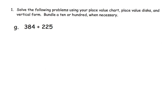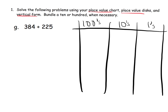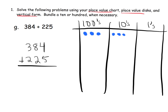Let's do another practice doing the exact same thing — relating the place value chart and the place value disks to the standard algorithm. I'm going to begin by drawing our place value chart with hundreds, tens, and ones. We're going to model 384 plus 225. So for 384, we've got 3 in the hundreds column, 1, 2, 3, 4, 5, 6, 7, 8 in the tens column, and 1, 2, 3, 4 in the ones column. There's our 384.